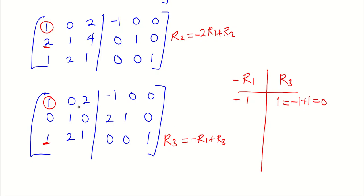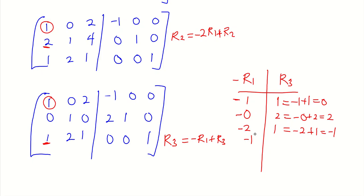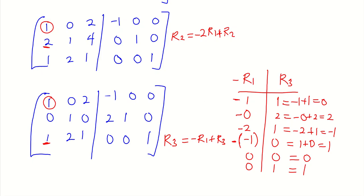Applying minus row 1 plus row 3: minus 0 plus 2 gives 2; minus 2 plus 1 gives minus 1. For the augmented part: minus 1 already has a minus sign applied, plus 0 gives 1; 0 minus 0 is 0; minus 0 plus 1 gives 1. So the new row 3 values are computed. This becomes the new element for row 3.